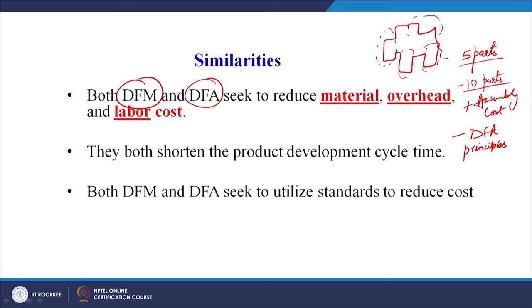DFA says minimize the number of parts so they are easy to assemble and make a modular design. DFM says the individual parts must be easy to manufacture — if there is a complicated part, divide it into simpler parts. Sometimes there is a conflict between DFM and DFA guidelines, so we try to find the similarities between the two approaches.